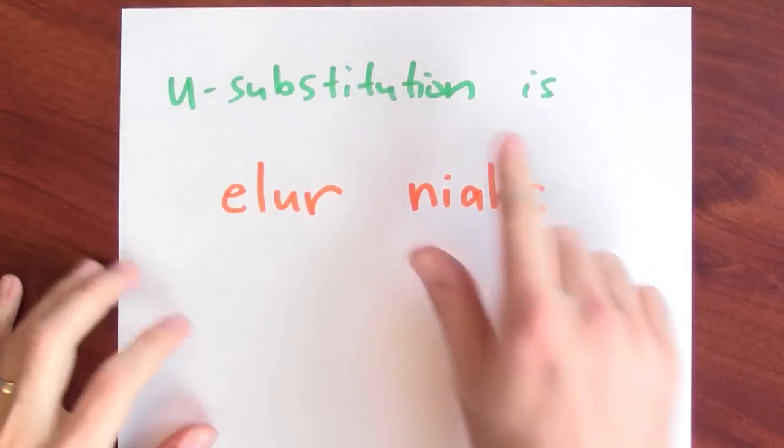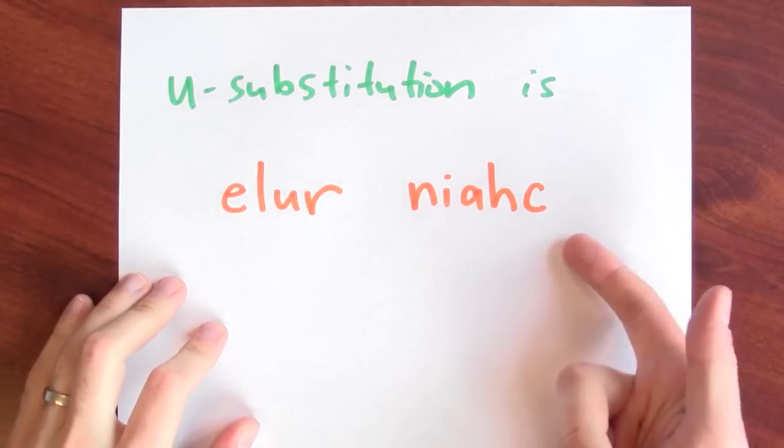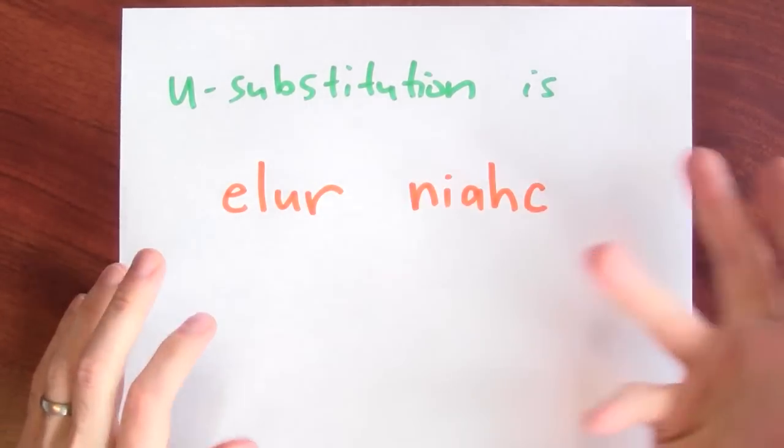We're going to see a ton more examples of this technique. And we're going to see that the hard part boils down to determining what to set u equal to. But if you're ever wondering, why does u substitution work? Remember, it's just allure niac. I mean, u substitution is allure niac - chain rule, but just in reverse.